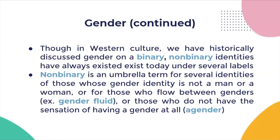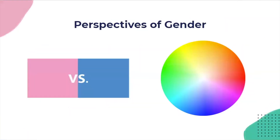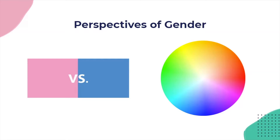We also want to talk about cultural context and the effects of colonization on gender. In Western culture, we typically talk about gender as a binary — women, men, etc. But non-binary identities have always existed and may exist today under several labels. Non-binary is an umbrella term for several identities if you identify as neither a woman nor a man, or you can flow between genders, or not have a gender at all — those are gender fluid and agender. In Western tradition we often talk about binary genders, but the reality of gender might look more like a color wheel, where people have different experiences of gender — my experience as a woman might not be the same as others who also identify as women.